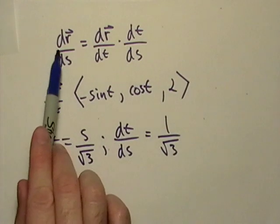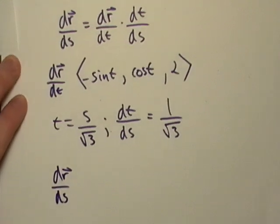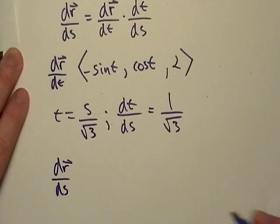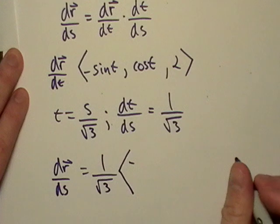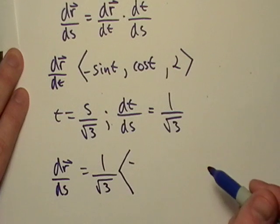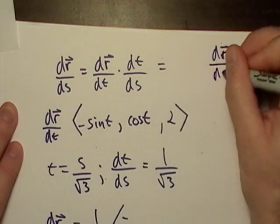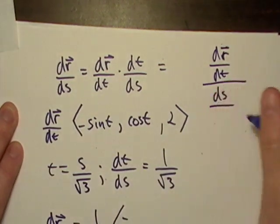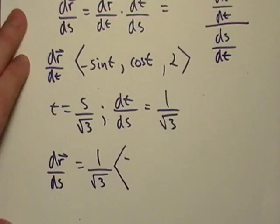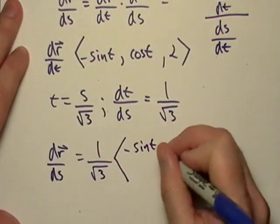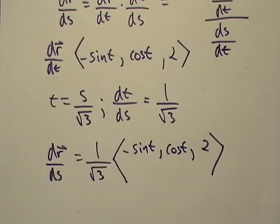So if I take DR/DS, what am I going to end up with? So basically what I'm doing, this is DR/DT divided by DS/DT. So let's see here, DR/DS is just going to be equal to sine T, cosine T, two. Now, and that is, that's actually by definition the unit tangent vector.